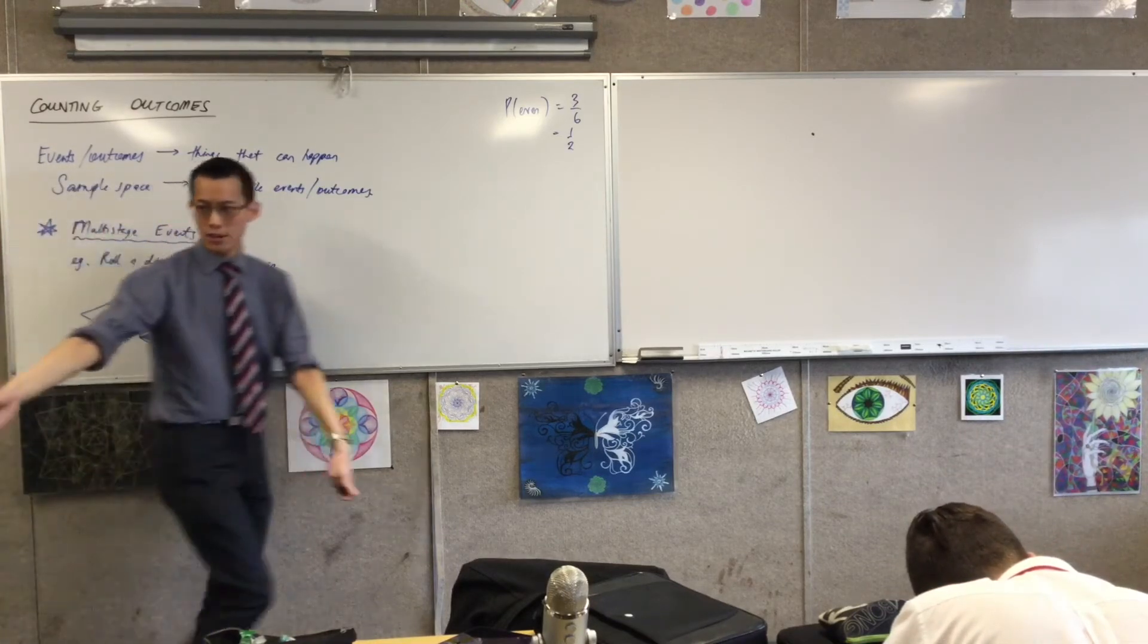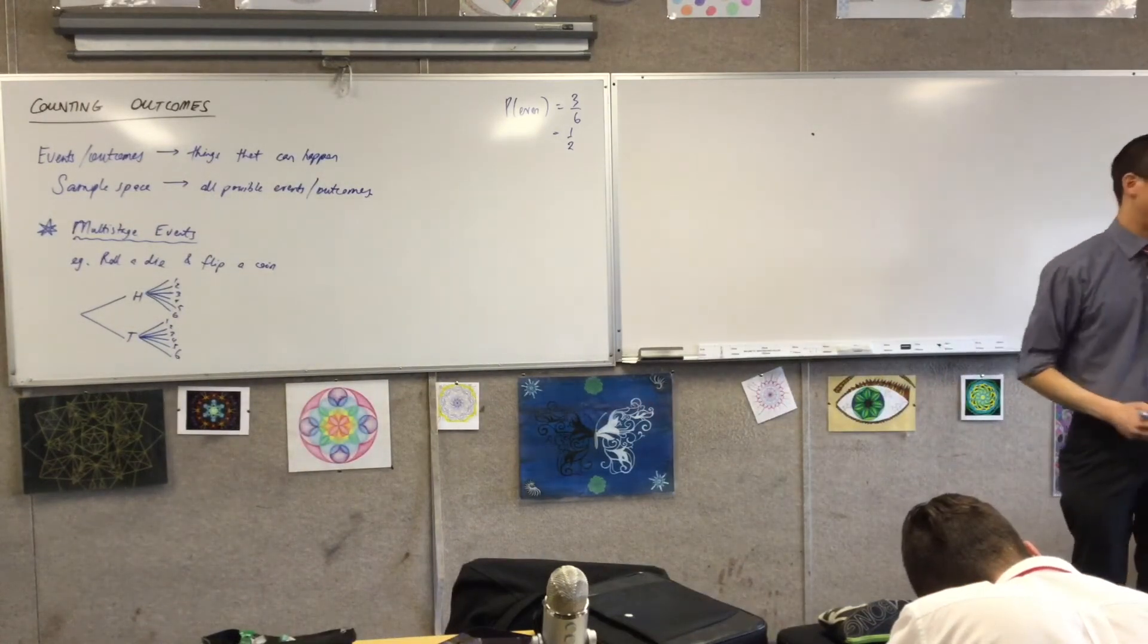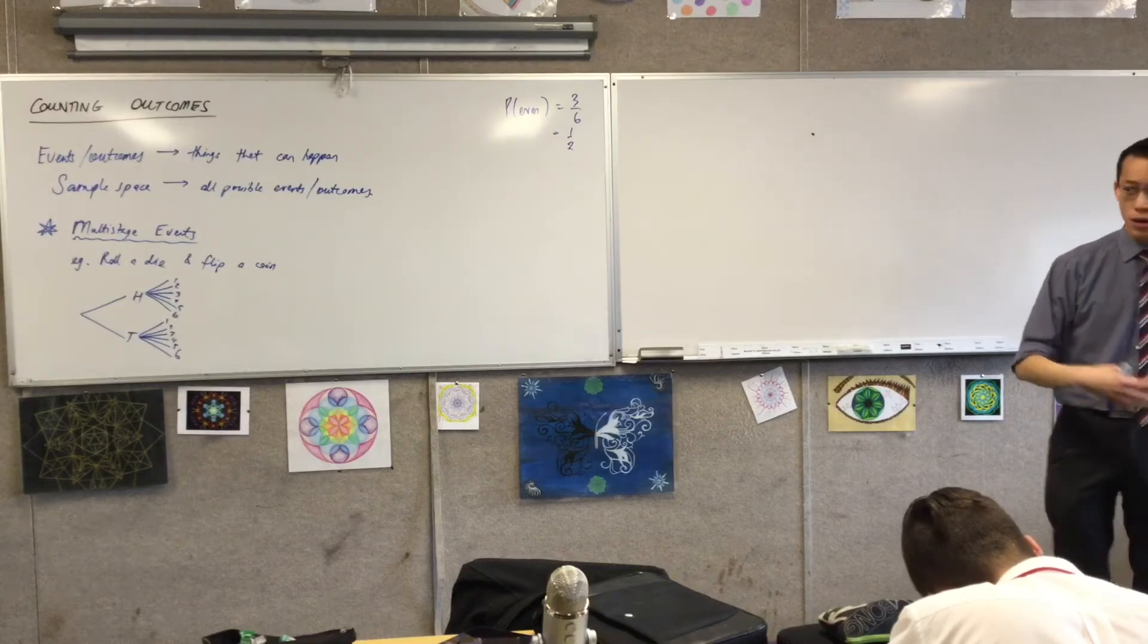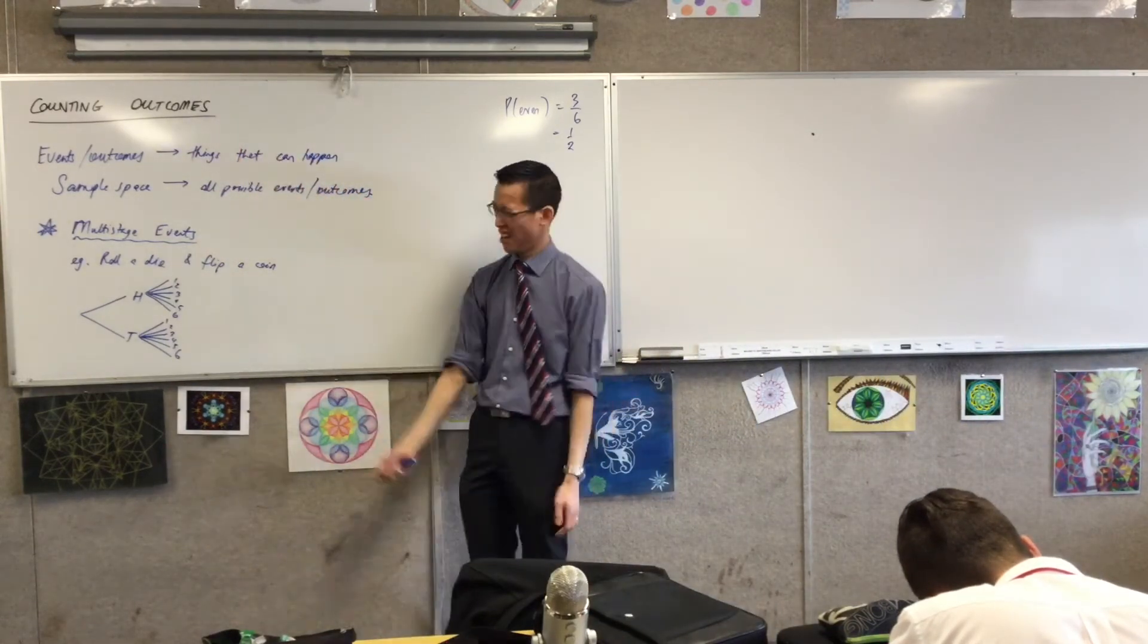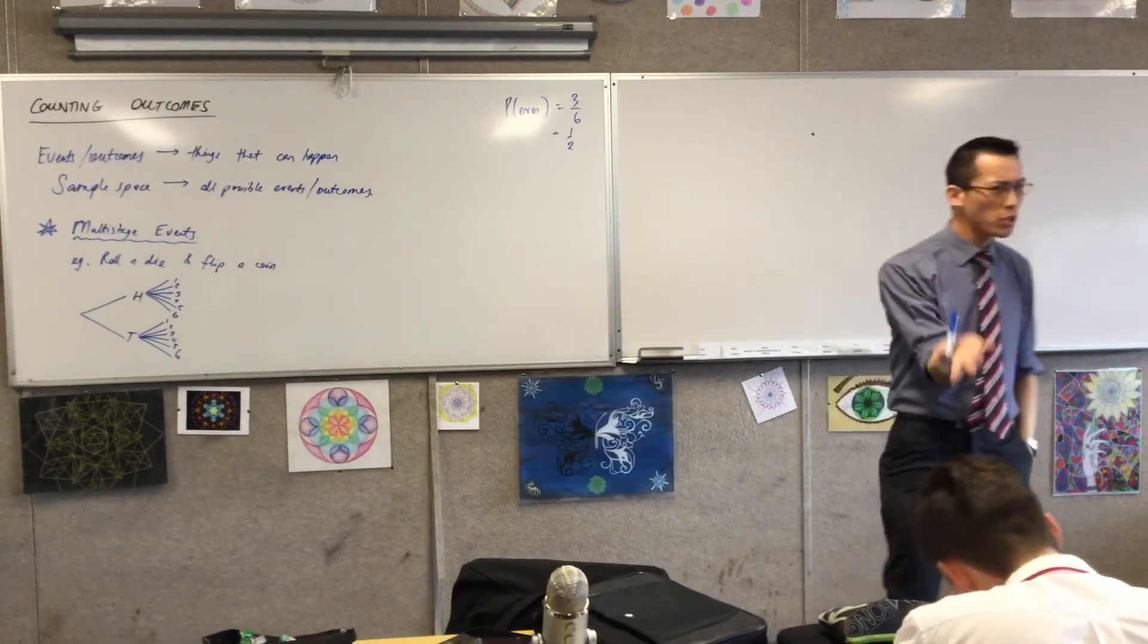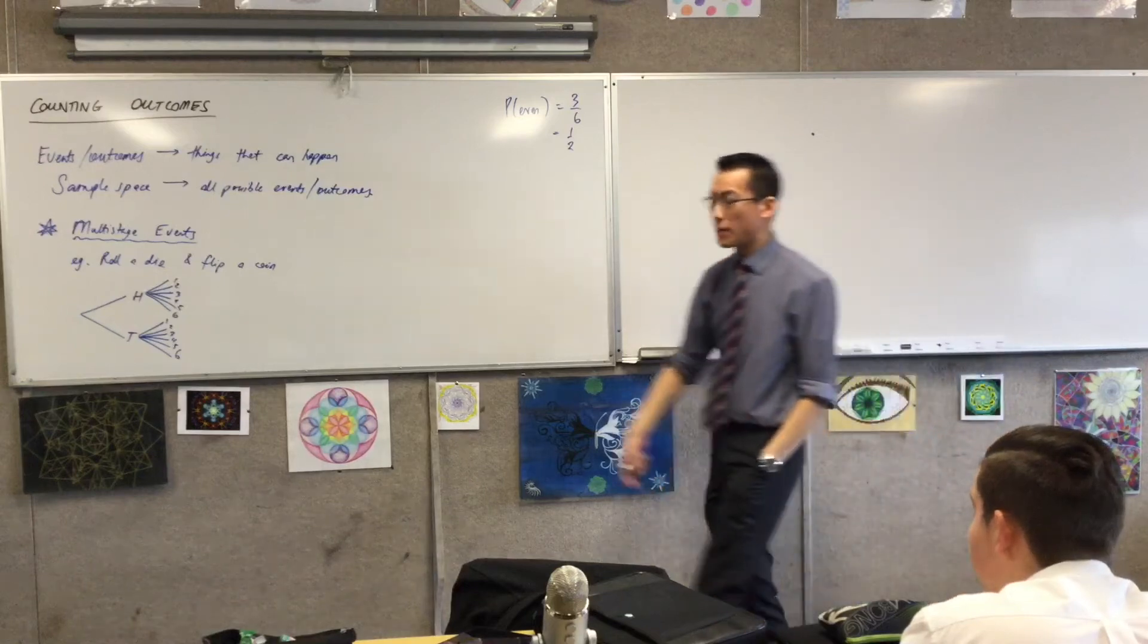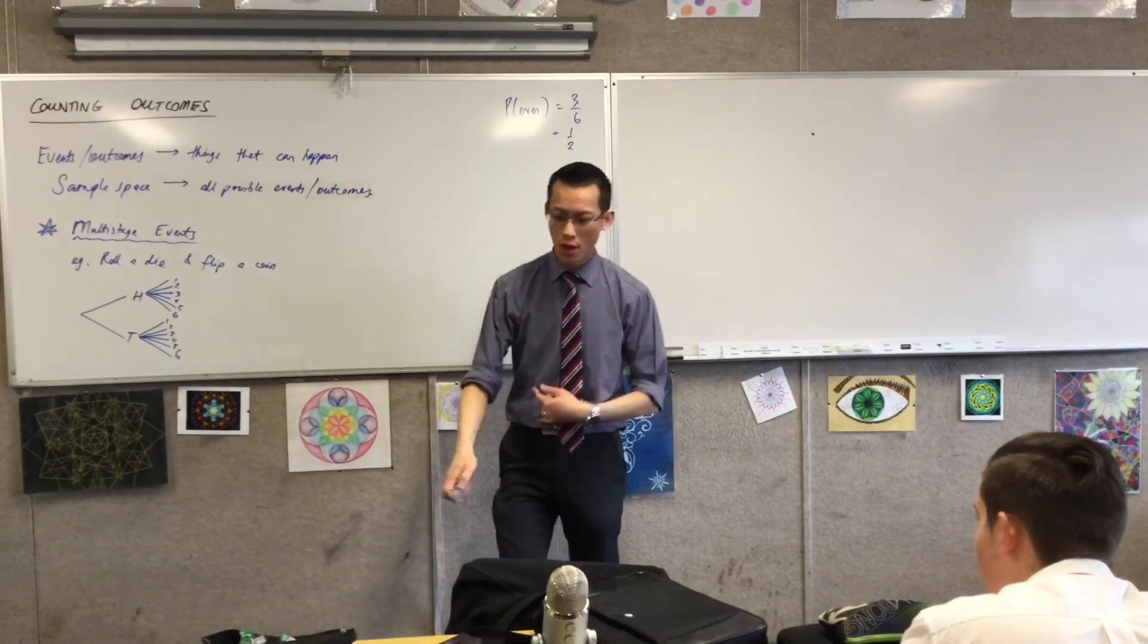So I heard it just mentioned, right, there are twelve and that's easy to count, but we didn't need to draw that diagram to know that there were twelve. How could we have counted the outcomes right from the outset without having to resort to drawing a diagram? It's just multiplication. That's all it is, right?